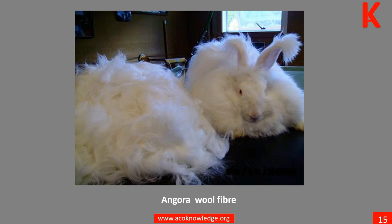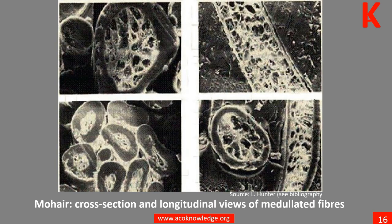The diameter of angora down hairs is around 14 microns, making them one of the finest animal fibers used in textiles. Learn more in Unit 4. In good quality mohair, medullated fibers can be a source of problems in many end uses when they differ in appearance from the non-medullated fibers.